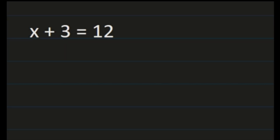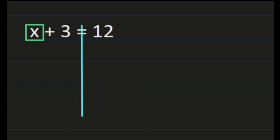For our first problem, we have x plus 3 equals 12. We're solving for that variable x, our unknown value. The first thing I always have my students do is put a box around it to remind them that's what they're wanting to isolate — we want to get this variable by itself. The next thing I suggest is to draw a line between their two sides, because this equal sign means that x plus 3 on the left side is of equal value to 12 on the right side.